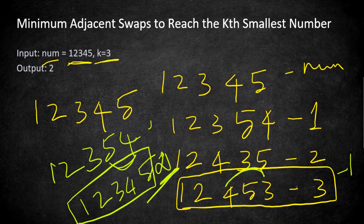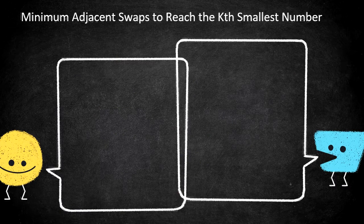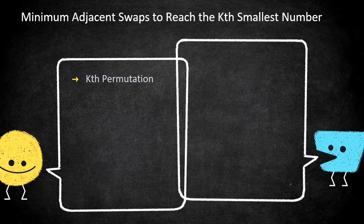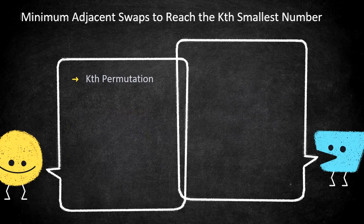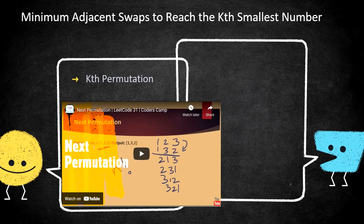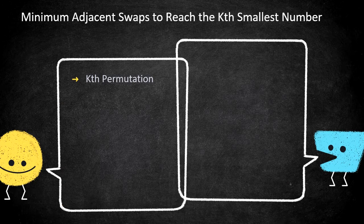This problem seems difficult but if you divide it into parts it becomes easy. It can be split into two parts. The first part is finding the kth permutation or kth wonderful number. We have already covered the 'next permutation' problem from LeetCode, and here we just call that function k times to get the target kth wonderful number.